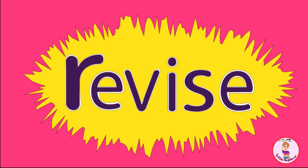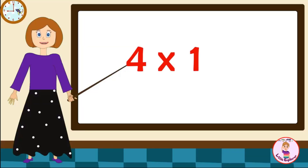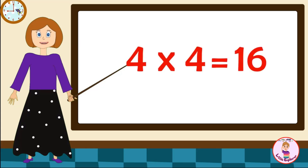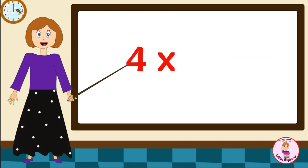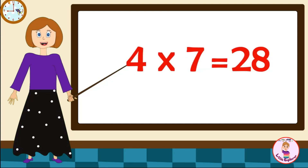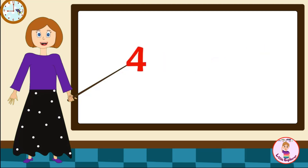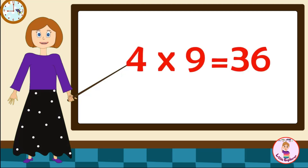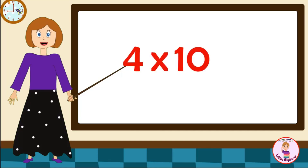Let's revise it one more time. Come on! Four-one's are four. Four-two's are eight. Four-three's are twelve. Four-four's are sixteen. Four-five's are twenty. Four-six's are twenty-four. Four-seven's are twenty-eight. Four-eight's are thirty-two. Four-nine's are thirty-six. Four-ten's are forty.